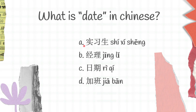Shi xixi sheng is intern, jing li is manager, re qi is date, jia ban is to work overtime. And 'date' in Chinese is b, re qi.